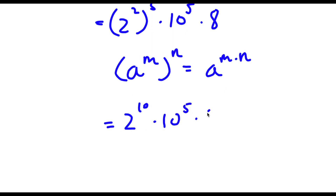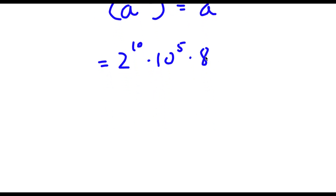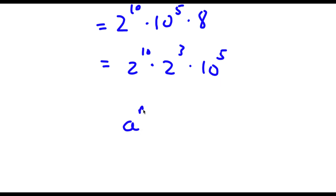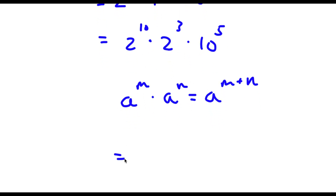Now I have this times 10 to the power of 5 times 8. Now 8 is the same thing as 2 to the power of 3. So now I have 2 to the power of 10 times 2 to the power of 3 times 10 to the power of 5. If I have something in the form a to the power of m times a to the power of n, this is equal to a to the power of m plus n. So 2 to the power of 10 times 2 to the power of 3 equals 2 to the power of 13. So now I have 2 to the power of 13 times 10 to the power of 5.